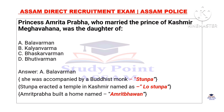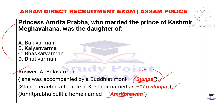There is an arrangement — a Buddhist temple was built in Kashmir, named Louis Tumpa. This Buddhist temple was erected in Kashmir and named Louis Tumpa. Amritaprabha also built a house named Amrit Bhavan, which was called Amrit Bhavan.